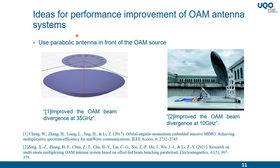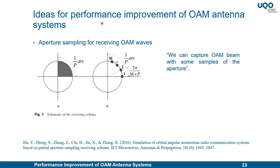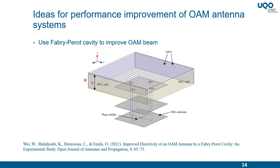Several methods have also been proposed for improving the performance of OAM antenna systems, such as using a standard parabolic reflector antenna in front of an OAM source, the use of a lens resonator, capturing only a sampled area of the OAM aperture using multiple patches or separated antennas, and using a Fabry-Perot cavity to enhance OAM beams.